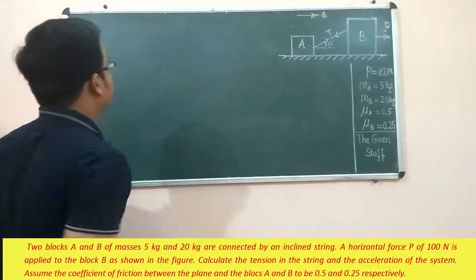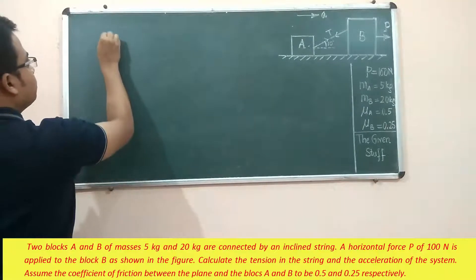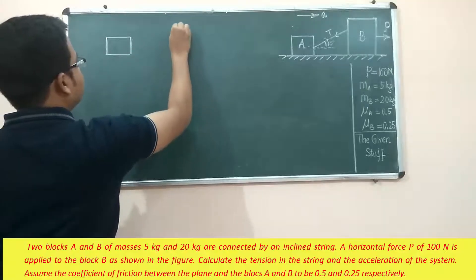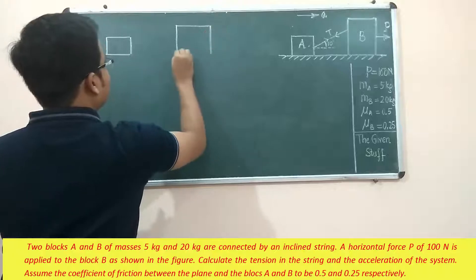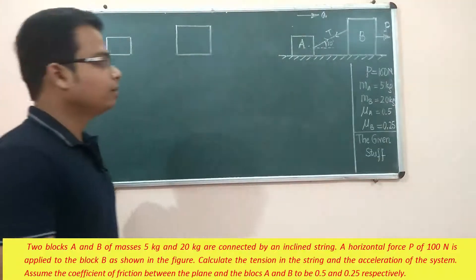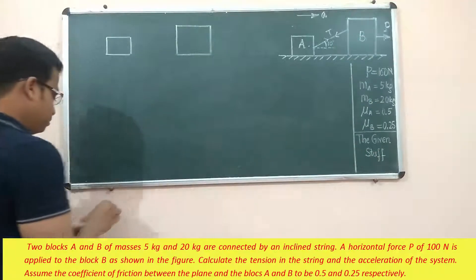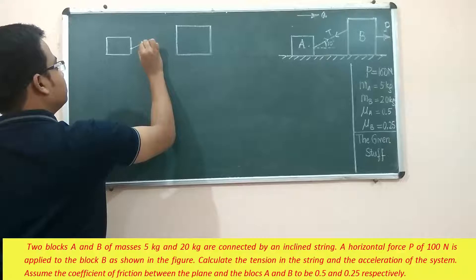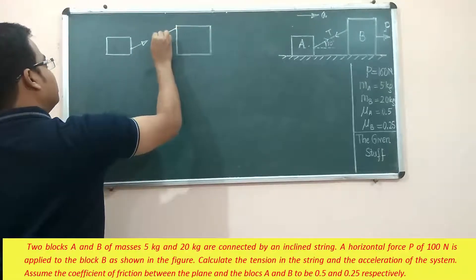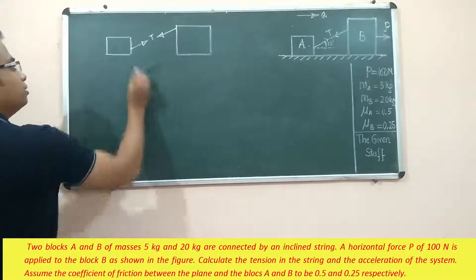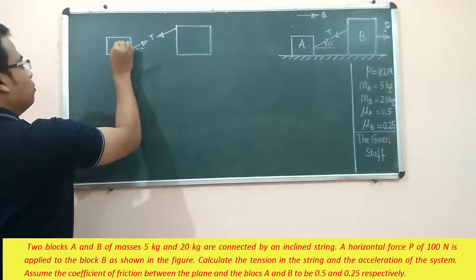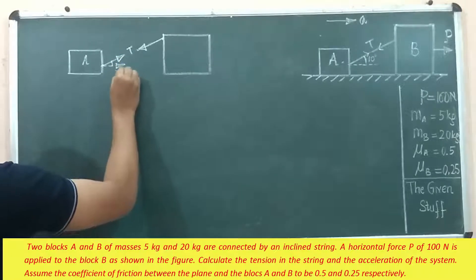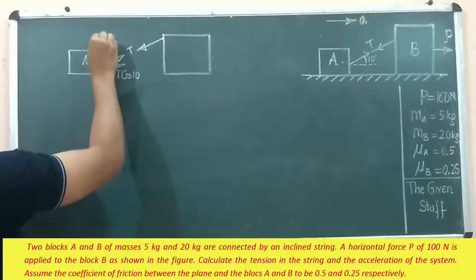Let's do the motion analysis for both blocks separately. I'm making a free body diagram, separating the two bodies. For block A, we have tension T, and this tension T has two components. The cos component at this angle of 10 degrees gives T cos 10, and the other component is T sin 10.